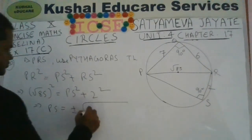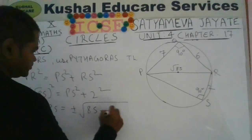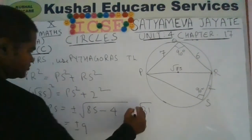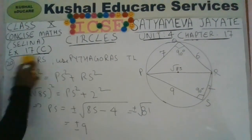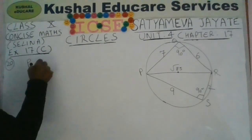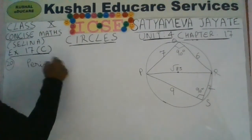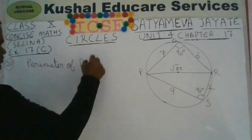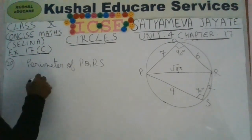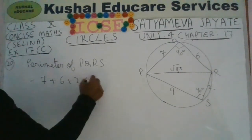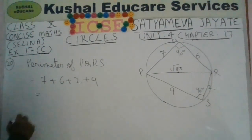The perimeter is the sum of the four sides of the quadrilateral. Here PS is 9 cm, so the perimeter equals PQ plus QR plus RS plus PS, that is 7 plus 6 plus 2 plus 9, giving a perimeter of 24 cm.